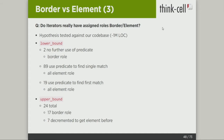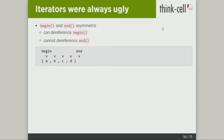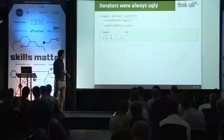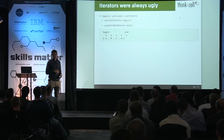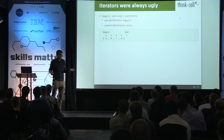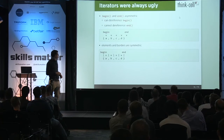My conclusion was: we can do this — we can do away with iterators and say you are a border, you are an element. And let's face it, iterators were always ugly. We have begin and end — begin is the first element and end is... something. This is nicer: you have elements and you have borders, and you have one more border than you have elements. It's all symmetric and nice.